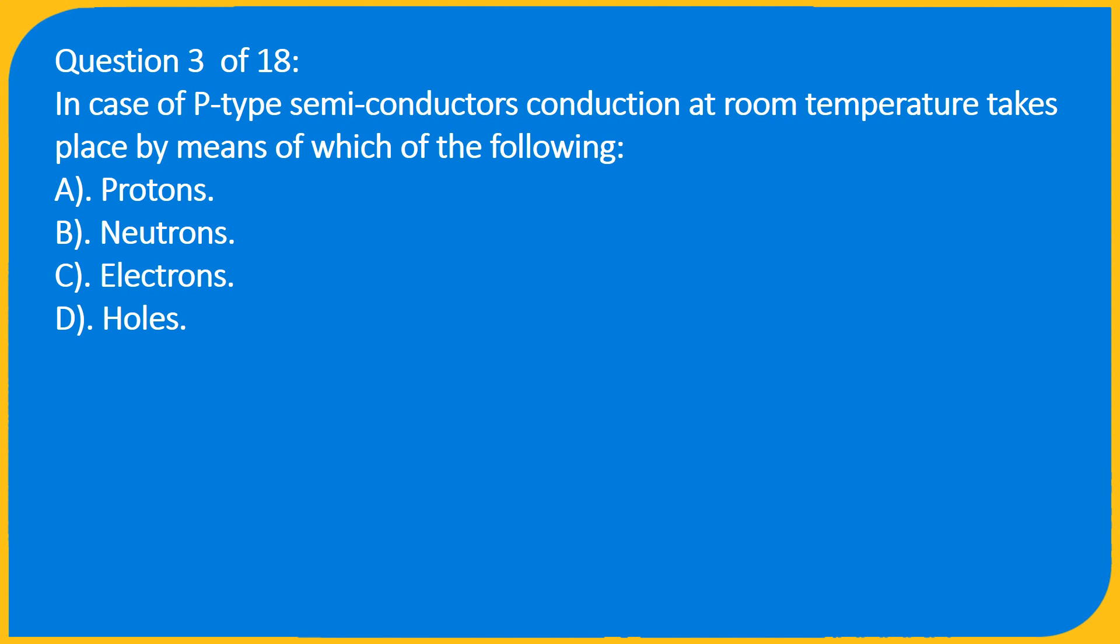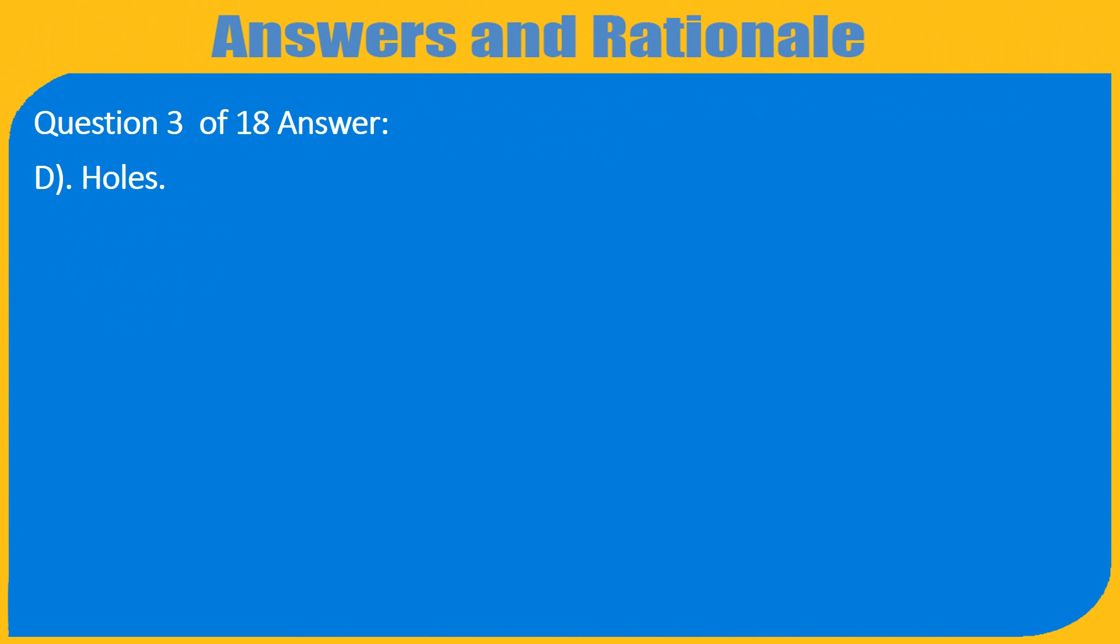Question 3 of 18: In case of P-type semiconductors conduction at room temperature takes place by means of which of the following: A. Protons, B. Neutrons, C. Electrons, D. Holes. Question 3 of 18 Answer: D. Holes.